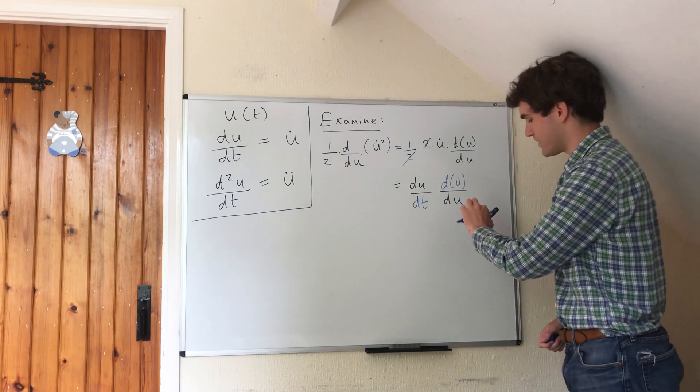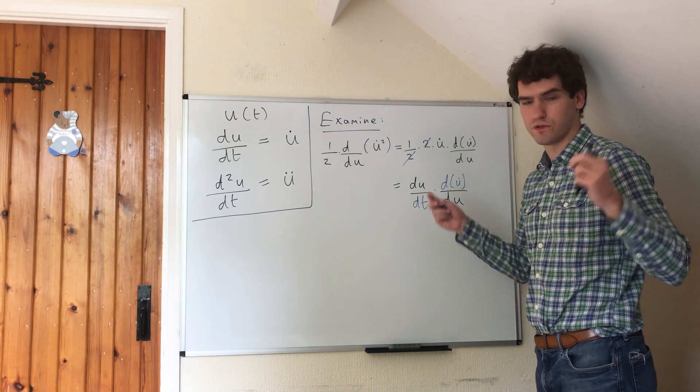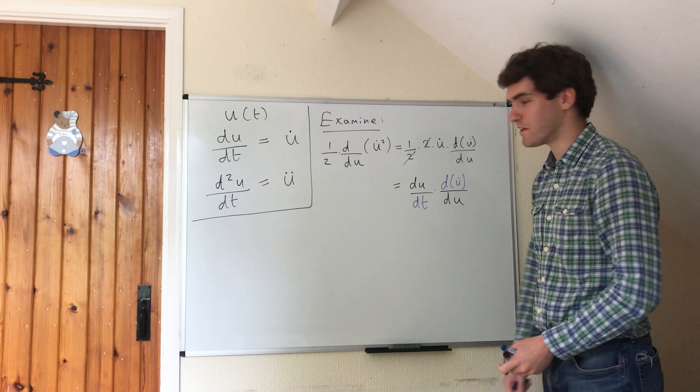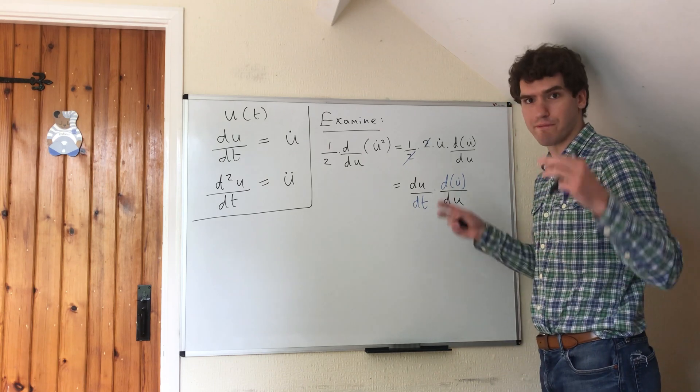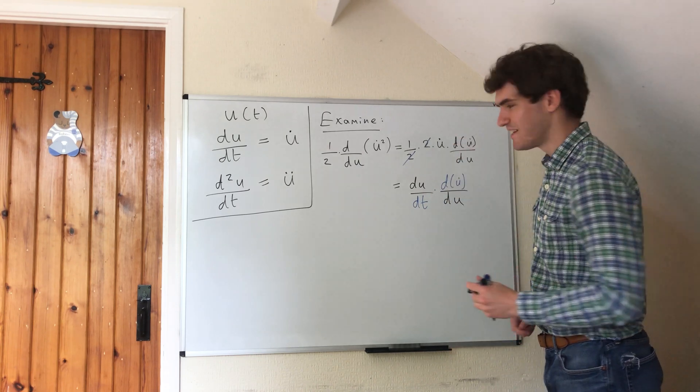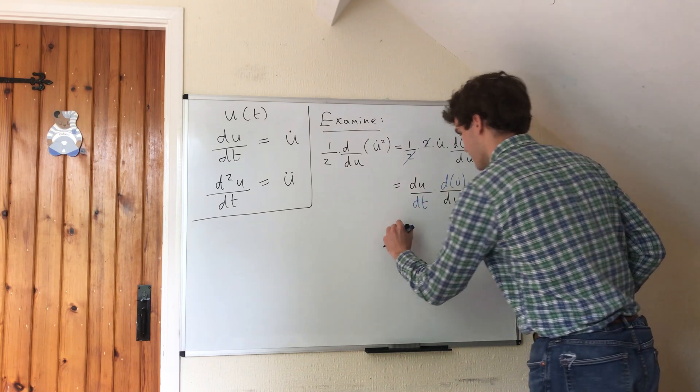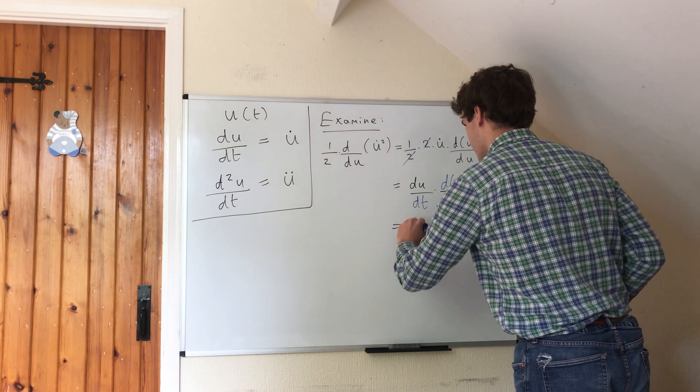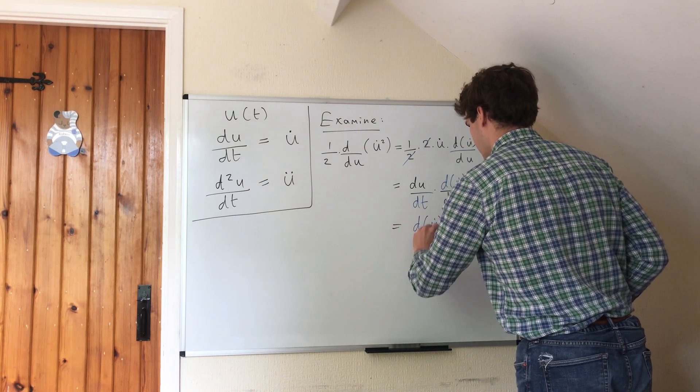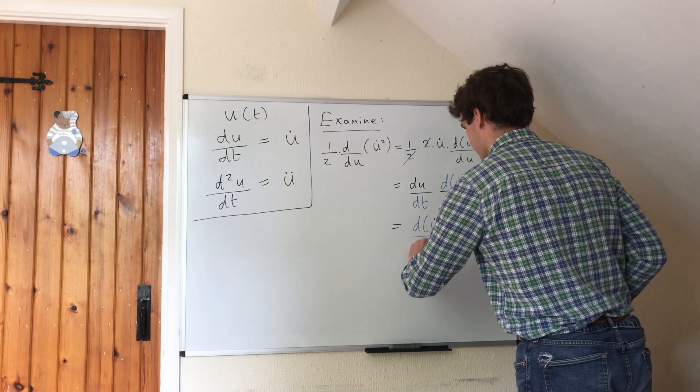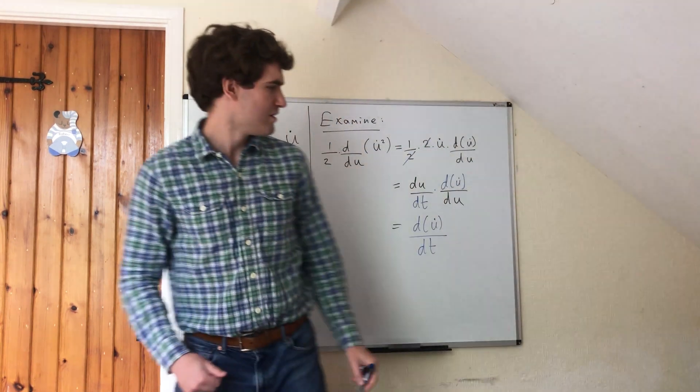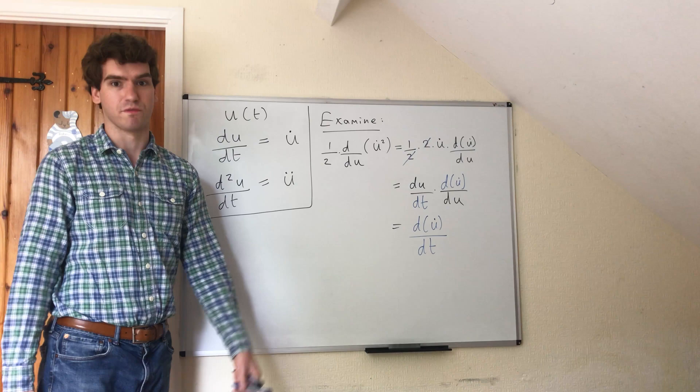And we see that these du's don't actually cancel, but if we use the chain rule, we can imagine them canceling, and we end up with du dot by dt. You just get that result from the chain rule.